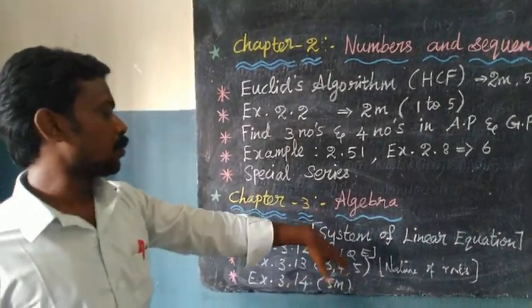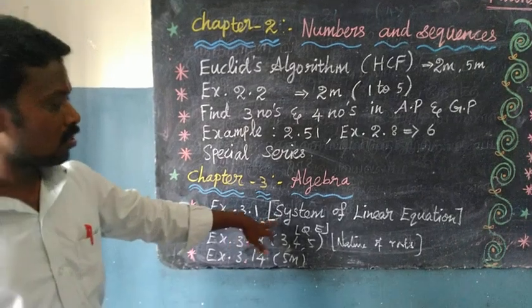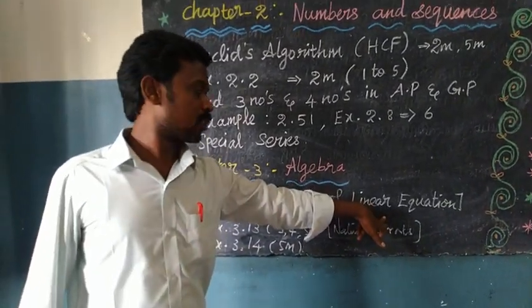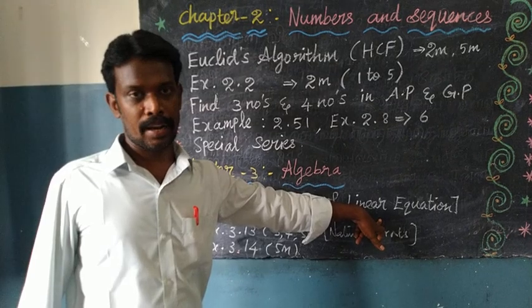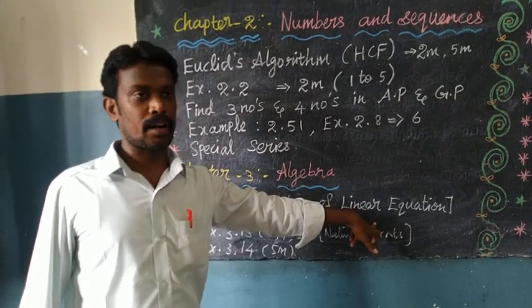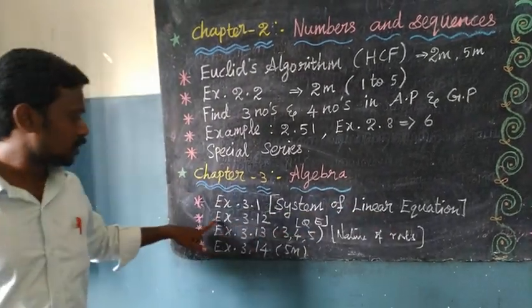Chapter 3: Algebra. Exercise 3.1 - System of Linear Equations with three variables. Age problems, the same.